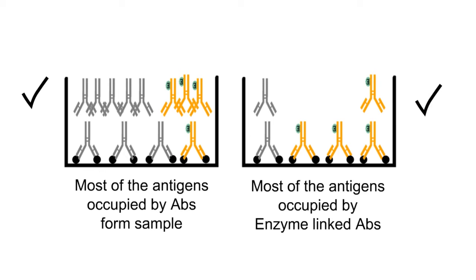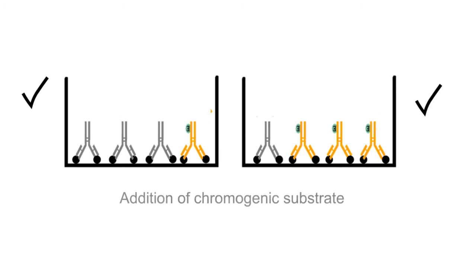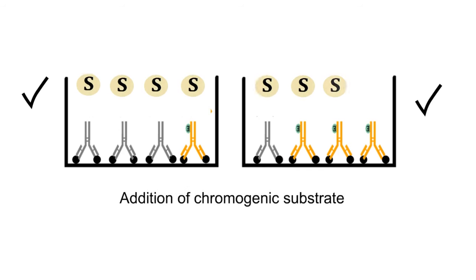After this, the well is washed to remove unbound antibodies. This step is followed by addition of chromogenic substrate and incubation for a fixed period of time. After incubation, the reaction is stopped by adding strong acids.